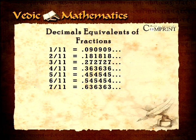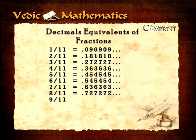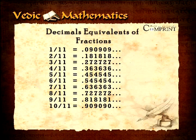Seven by eleven equaling 0.636363, and so on. Eight by eleven equaling 0.727272, and so on. Nine by eleven equals 0.818181, and so on. Ten by eleven equals 0.909090, and so on — which is nothing but the multiples of nine.